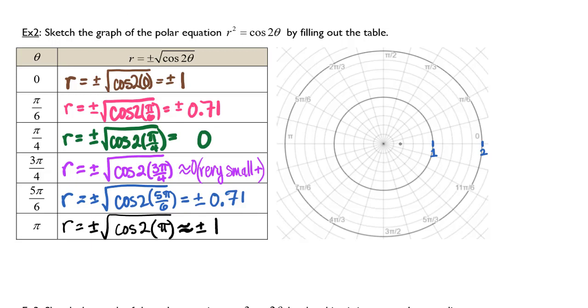Now let's go back and color code this. At 0 radians, I'm at 1 and negative 1.